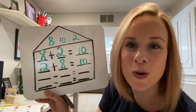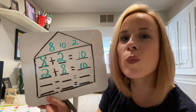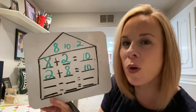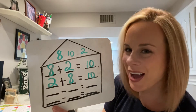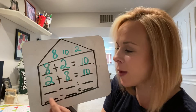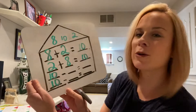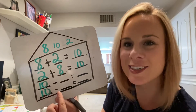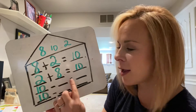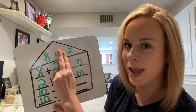Now let's move down to our subtraction sentences. Remember, in a subtraction sentence the whole will always come first — the whole or the biggest number will always come first. So again, which number is the biggest? You got it — 10 is the biggest number. I'm going to write that number 10 first in both my subtraction sentences, because the whole is what we start with first. Now we have to take away a part to get to another part. The two numbers left are eight and two.